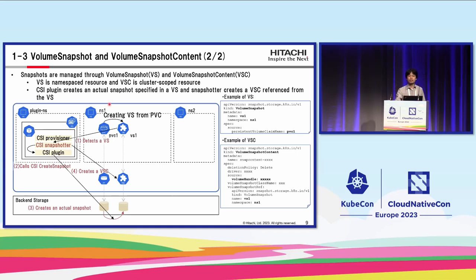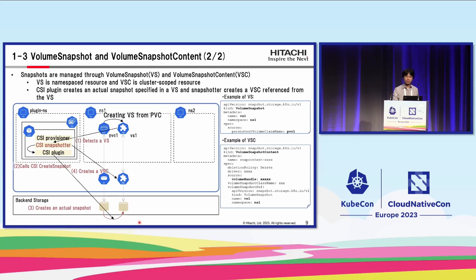Once a VS is created by a user, a CSI snapshotter detects that a VS is created. Second, the snapshotter calls the CSI CreateSnapshot call to the CSI plugin. Third, the plugin creates an actual snapshot in the backend storage. Fourth, the snapshotter creates a VSC and sets a reference to the actual snapshot. After that, bidirectional binding is created between VS and VSC by the snapshotter, and the snapshot becomes ready to be consumed by users through VS.